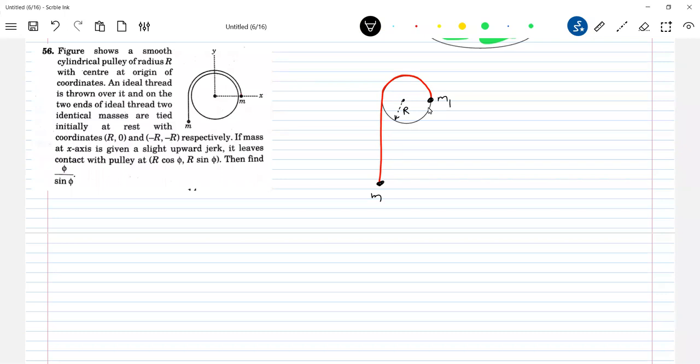Of course, they are the same. Let me tell you, if the mass is x, it leaves contact with the pulley at r cos phi, r sin phi, then find the ratio phi by sin phi or theta if you want, you can take theta that way.